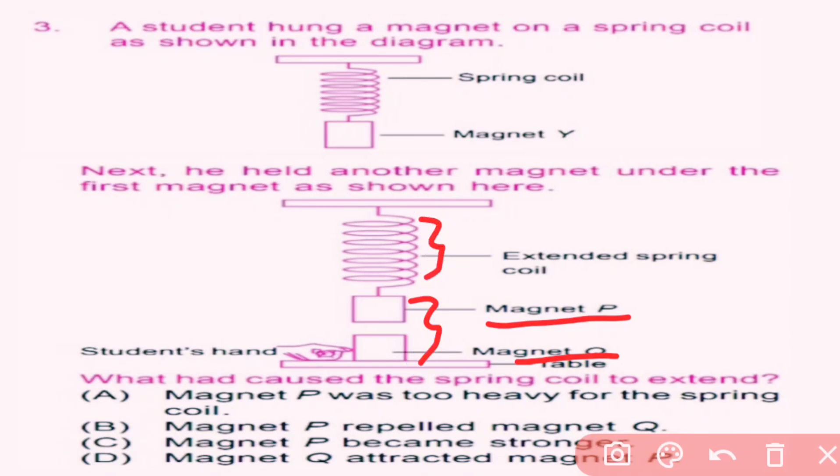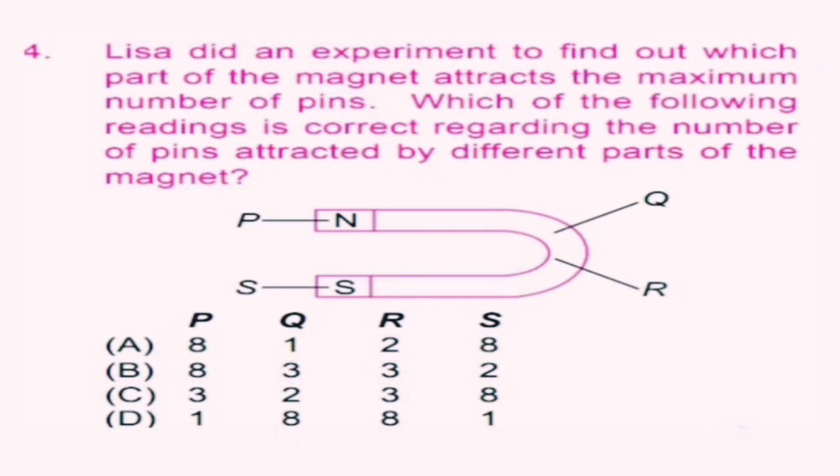Question number 4. Lisa did an experiment to find out which part of the magnet attracts the maximum number of pins. Which of the following readings is correct regarding the number of pins attracted by different parts of the magnet?